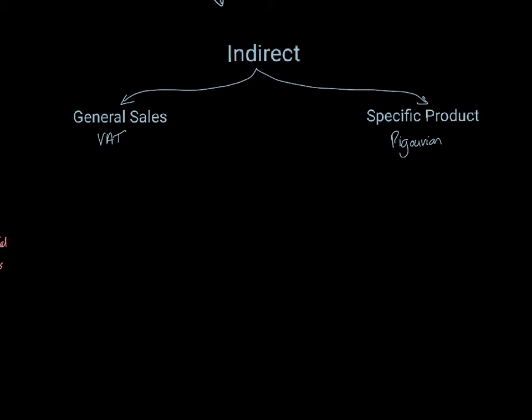The first type of indirect tax that we can talk about is a general sales tax. That means a sales tax which is applied to the vast majority of products, if not all the products purchased within an economy. So in the UK, that's VAT. But in different countries, it will be called different things. But that's applied to virtually every product.